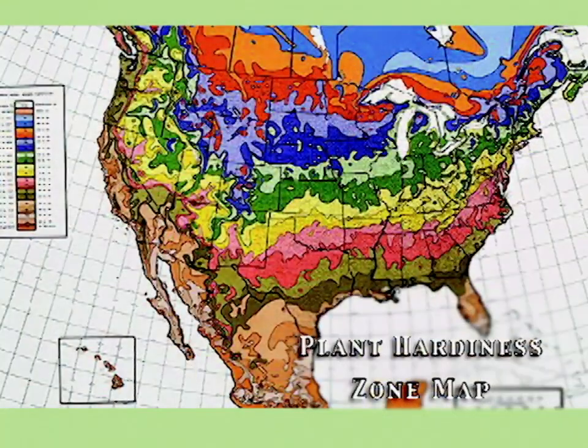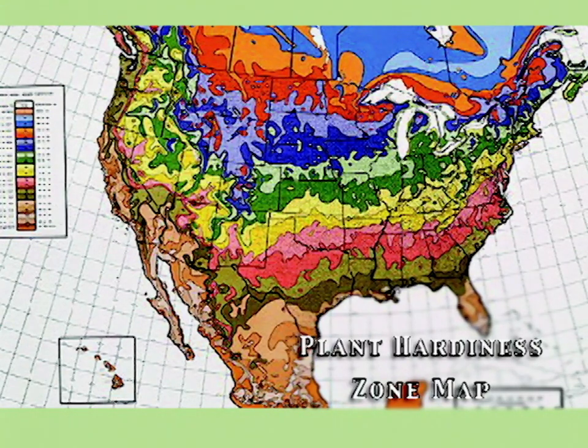Now in 1990 that map was revised again and has more detail to it, and each of these zones was subdivided into two zones. So now we have zones 6A, 6B, zone 7A, 7B. These zones now represent five degrees of difference. So for example 6A refers to areas that have annual minimum temperatures of minus 10 to minus 5, zone 6B from minus 5 to 0, etc.